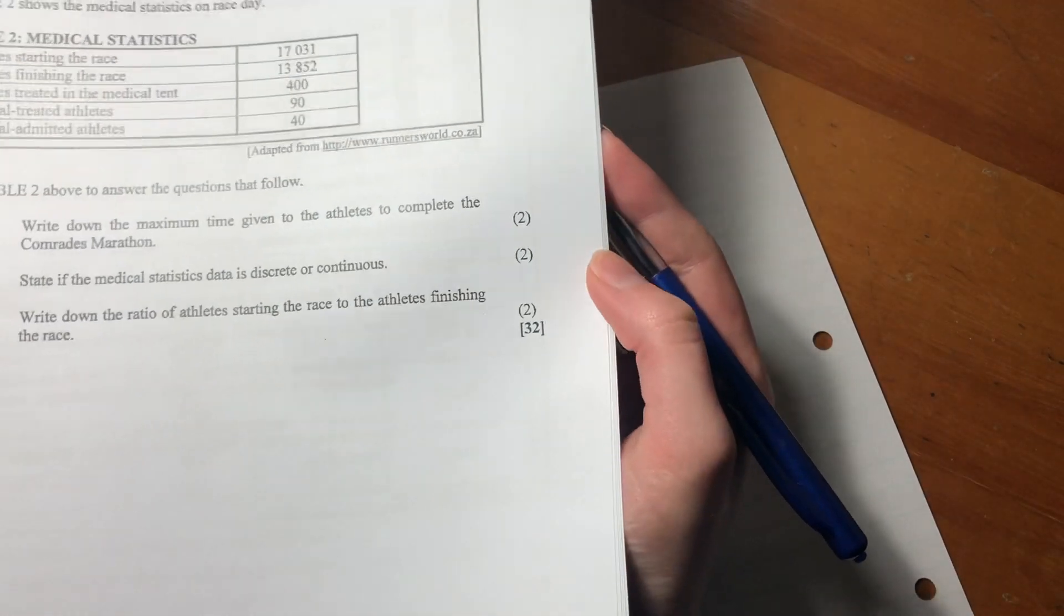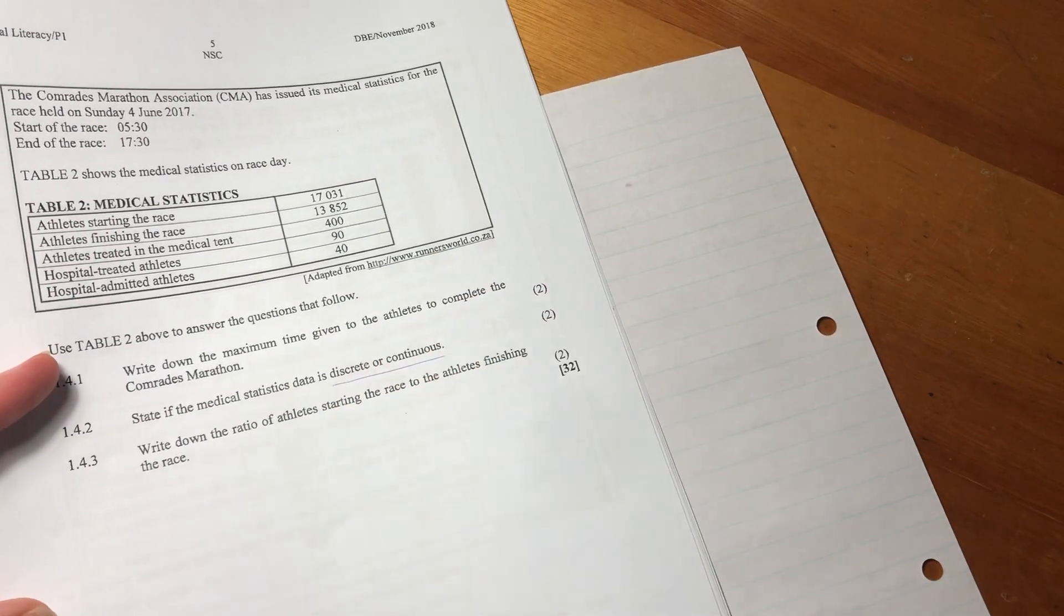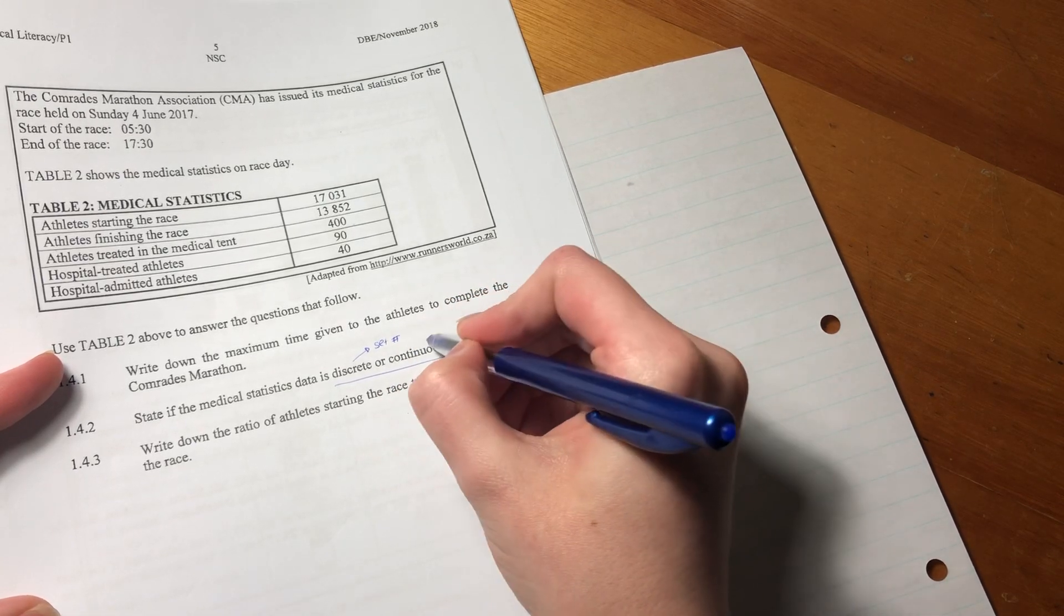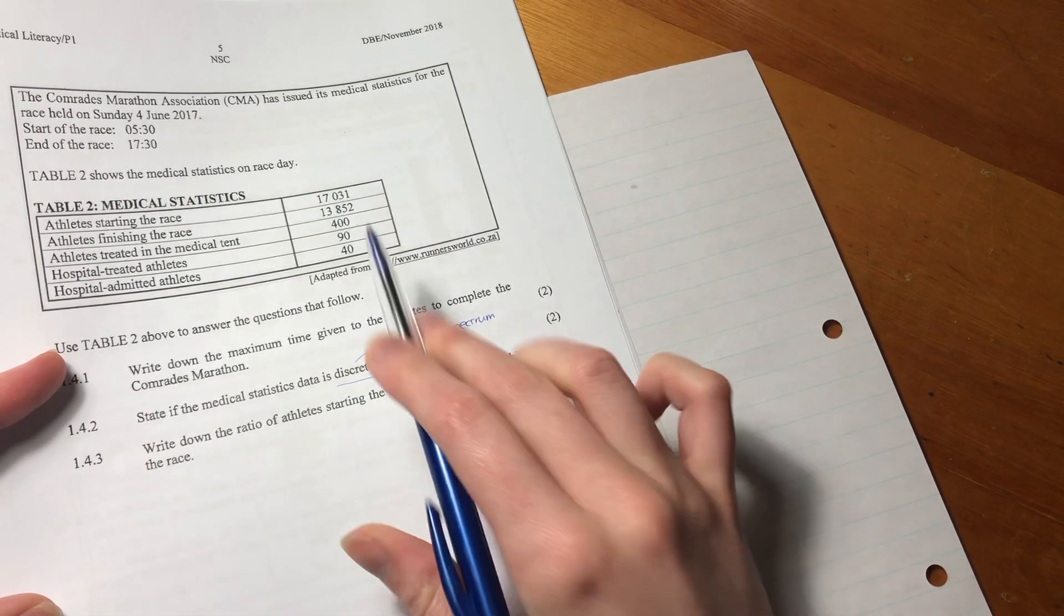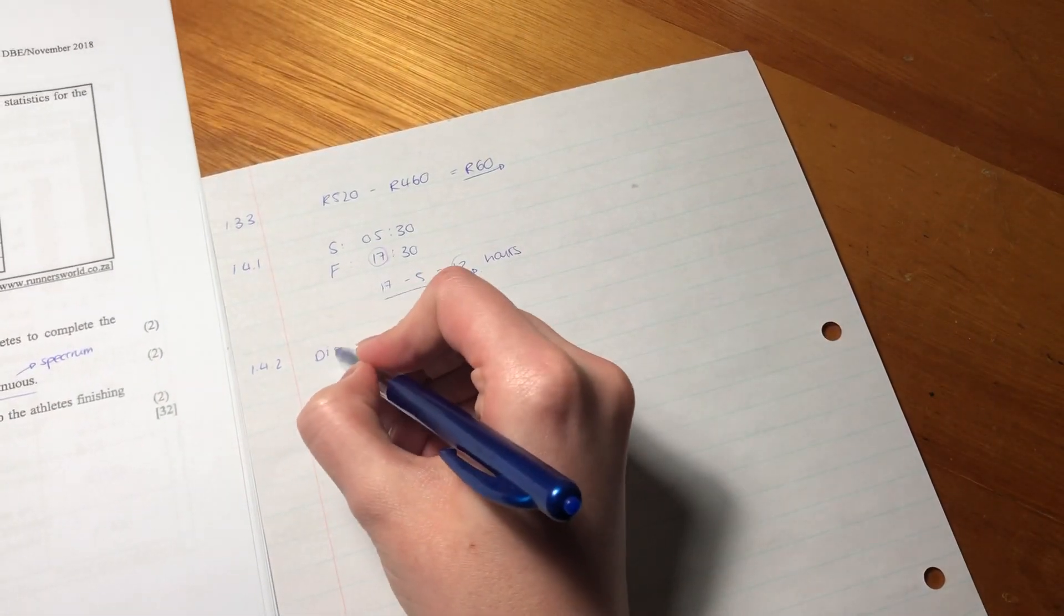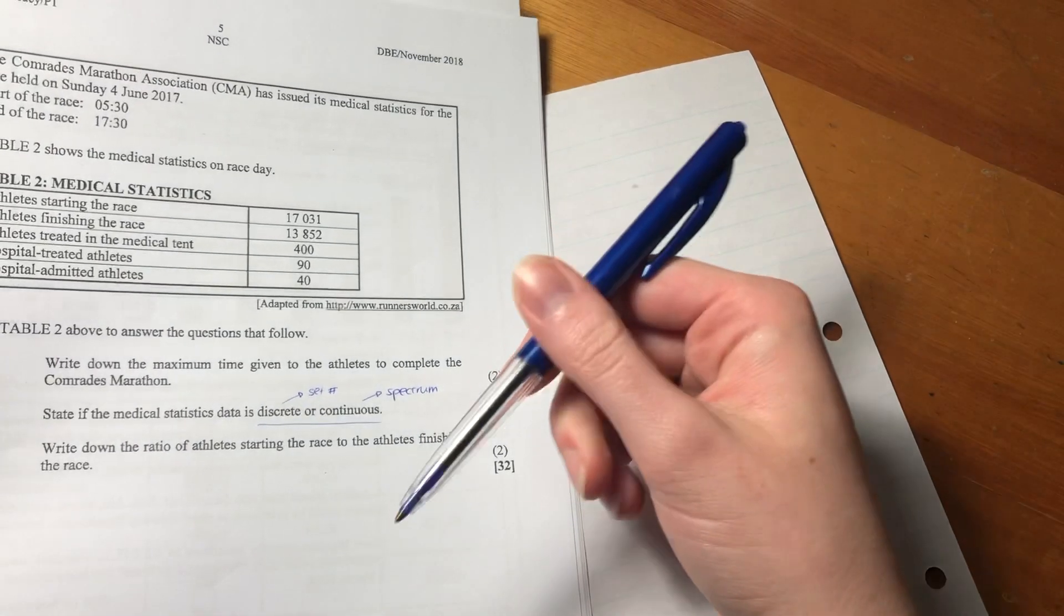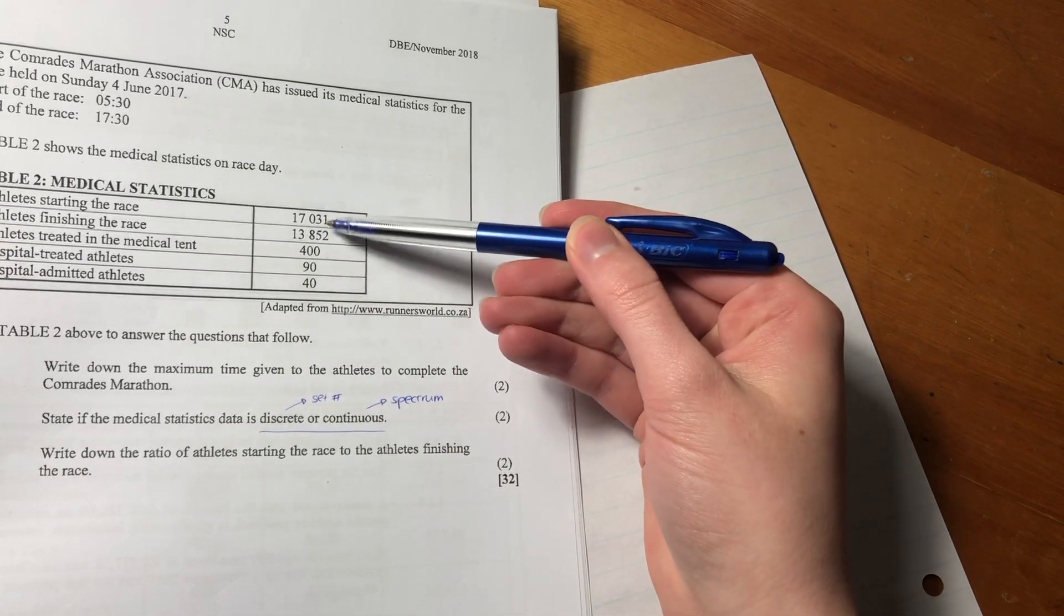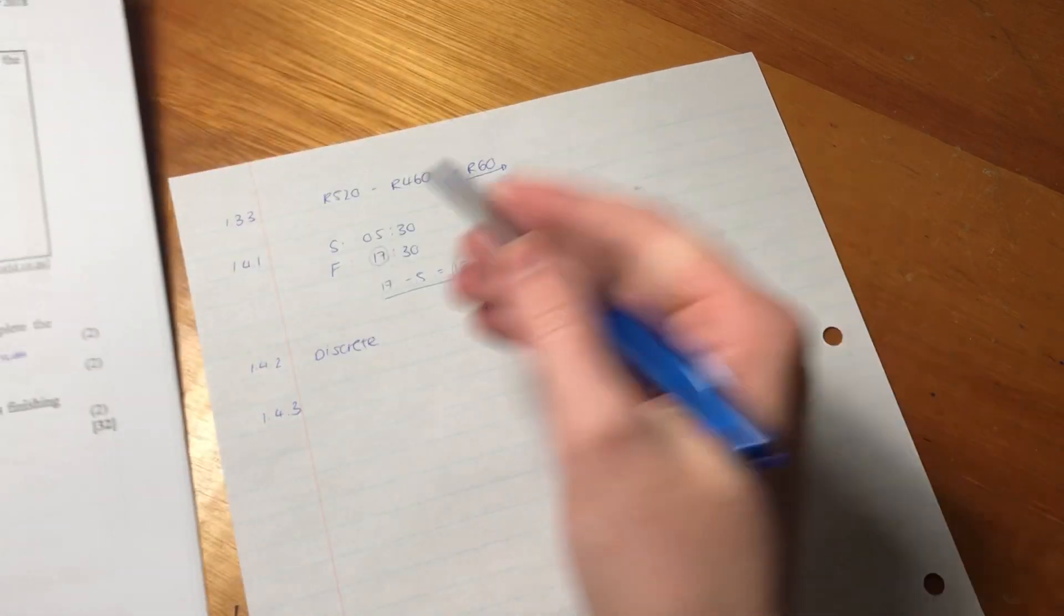Then it says, state if the medical statistics data is discrete or continuous. So they're testing whether you understand the difference here. Discrete means that it is a set number. Continuous means it's on a spectrum, in a range. Here, we know that it's discrete. There's specific numbers, just specific numbers. There's no sort of continuum of people that went. The amount of people that initially did it, there could have been any number from the subset, but the number of people that actually needed medical attention were specific numbers. It's a discrete number.